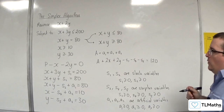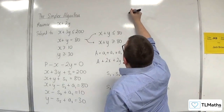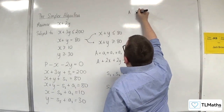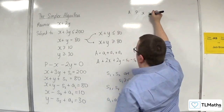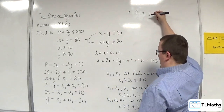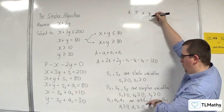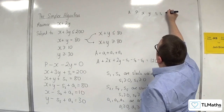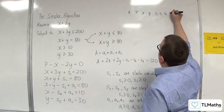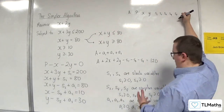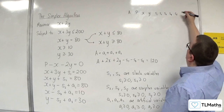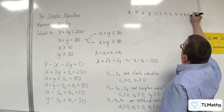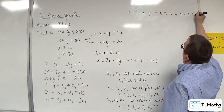So we've now got everything we need. The column headers for our tableau are: A, p, x, y, s1, s2, s3, s4, s5, a1, a2, a3, and the right-hand side.